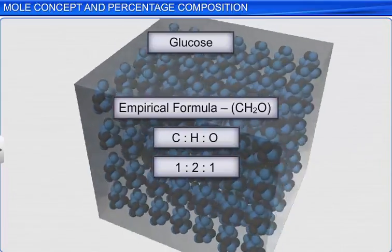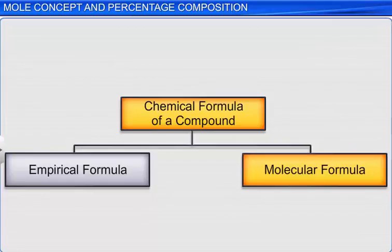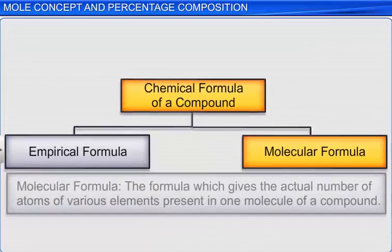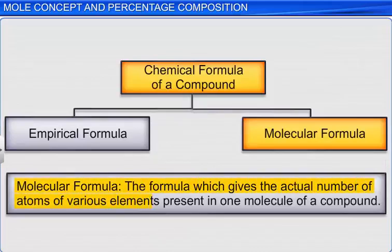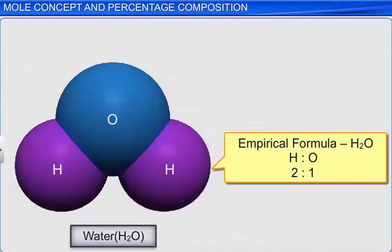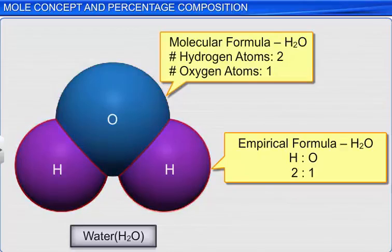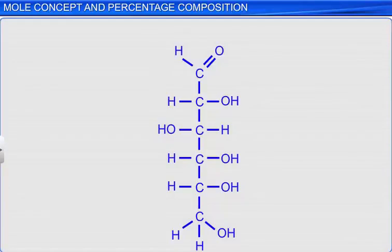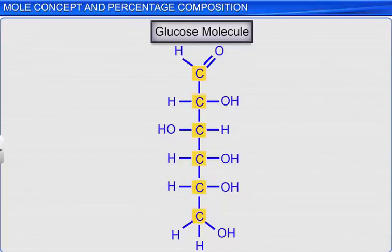Now, let's look at molecular formula. The molecular formula is defined as the formula which gives the actual number of atoms of various elements present in one molecule of a compound. In case of water, the molecular formula is H₂O, same as the empirical formula, because one molecule of water contains two atoms of hydrogen and one atom of oxygen. In case of glucose, the molecular formula is C₆H₁₂O₆, meaning one molecule of glucose has six carbon atoms, 12 hydrogen atoms, and six oxygen atoms.